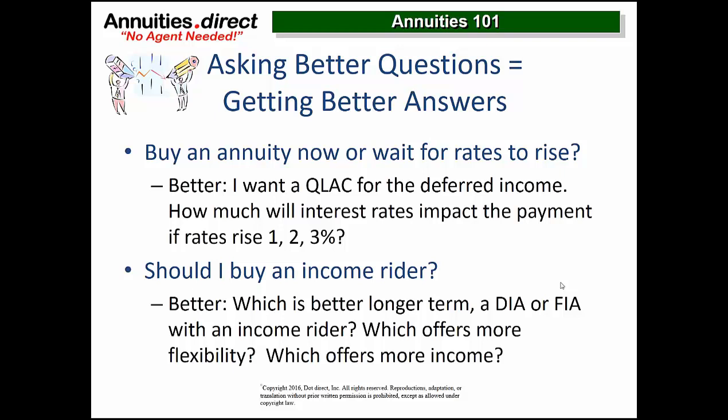Should I buy an income rider? Income riders and deferred income annuities can both solve for income later — they get you to the same place by different roads. Outside of an IRA in a non-qualified account, deferred income annuities have an exclusion ratio giving you a tax-preferred income stream, whereas most income riders are LIFO — last in, first out — on taxation. There is a book on income riders you should read — email us for a copy or find it on Amazon. There are also books on SPIA, MYGA, QLACs, and longevity annuities. Any of these products has a 50-to-60-page book that will get you 100% up to speed.